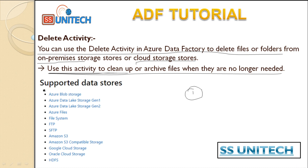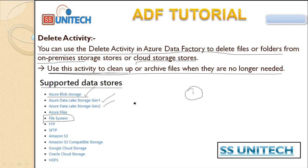Here we can see the supported data stores and formats. First is Azure Blob Storage, next is Azure Data Lake Gen 1 and Gen 2, and then File System. The File System option is used for your on-premises environment, while Azure Blob is for deleting data from Azure Blob Storage. Now let's go to the browser and see this in practice.